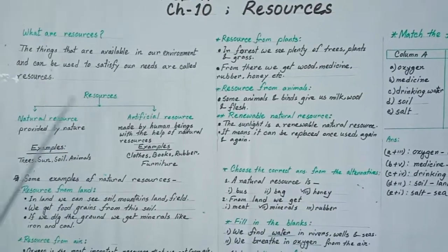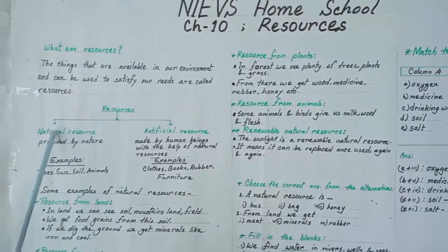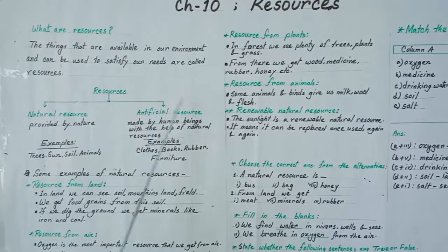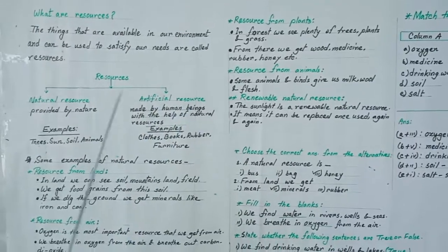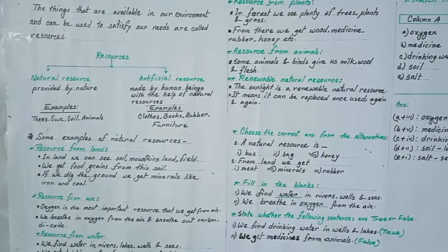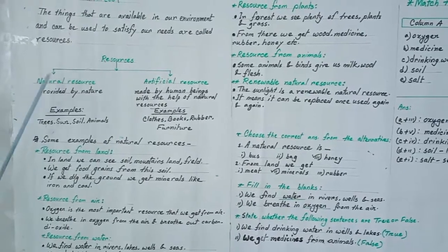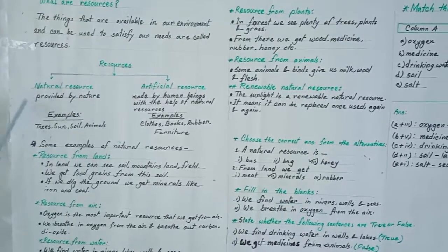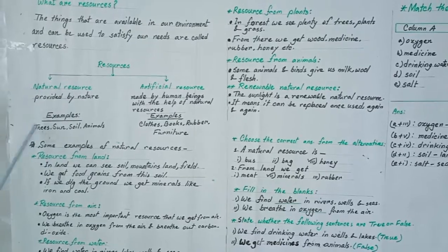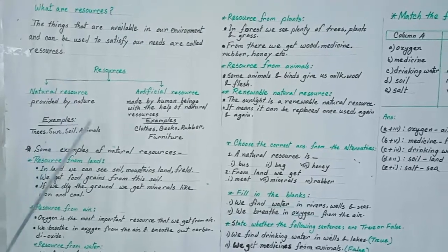There are two types of resources. First one is natural resources and another one is artificial resources. Artificial resources are also called manmade resources. Natural resources are those things provided by nature. For example, trees, sand, soil, animals.